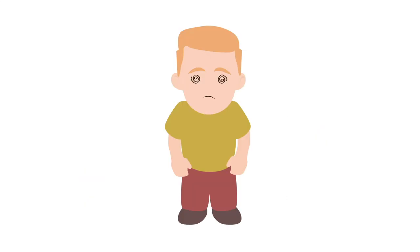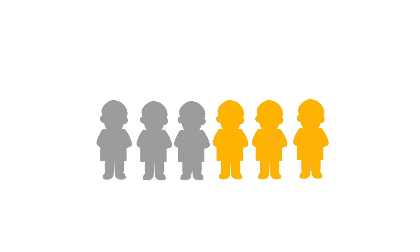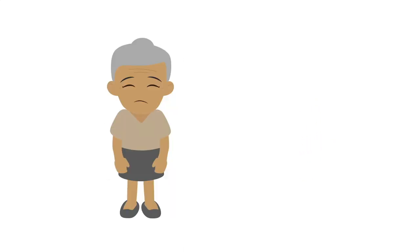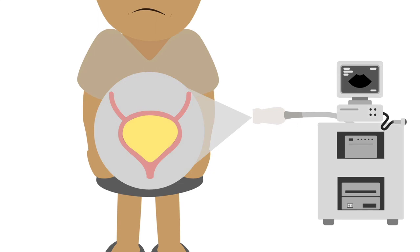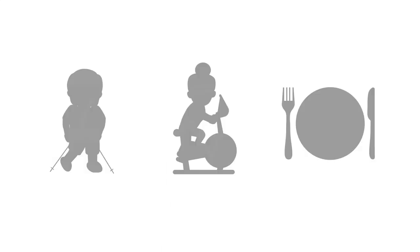The treatment of delirium is aimed at reversing the underlying condition. Up to 50% of delirium is reversible in a hospital setting. For example, our patient Rose had severe pain in her lower abdomen. Focused ultrasound confirmed urinary retention and a urinary catheter was placed. Rose urinated 850 milliliters in 5 minutes. Her agitation resolved, but she was still confused.